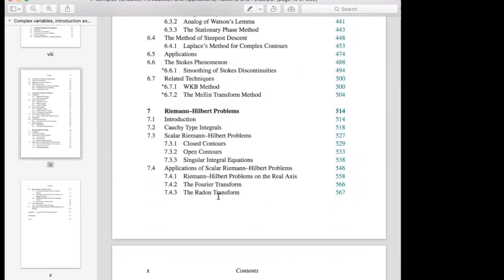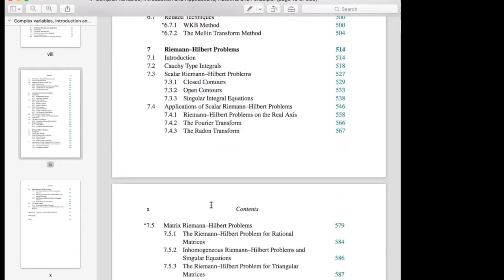And the last chapter is on these Riemann-Hilbert problems, which I don't know a whole lot about them, but I know that they come up. I know that there's been recent work on them, that they come up in soliton equations and some problems involving random matrices and probability. Even people doing pure math should learn the material in this book.